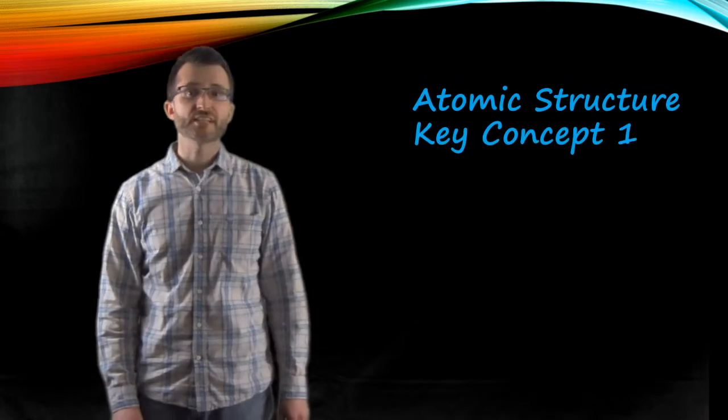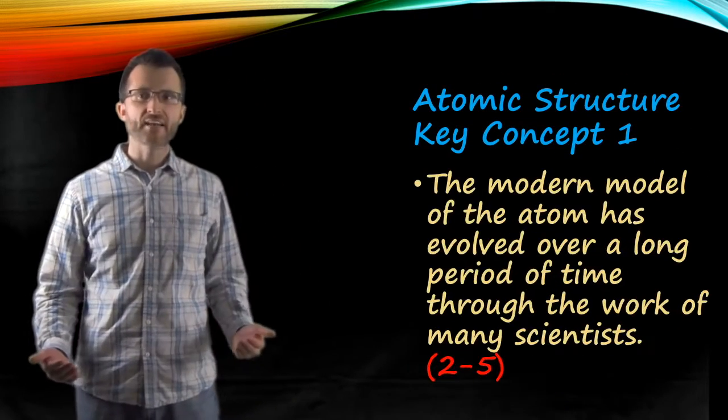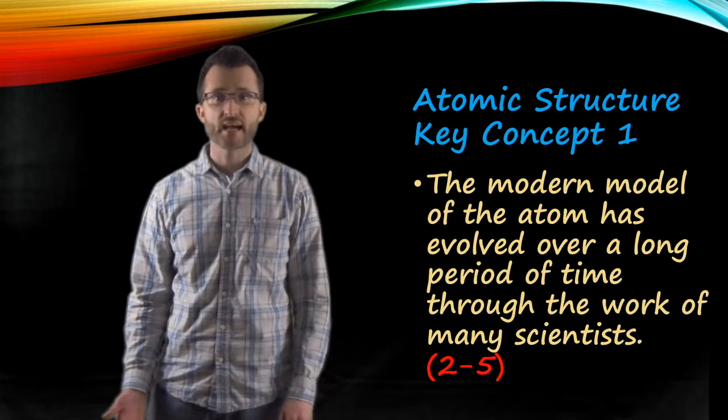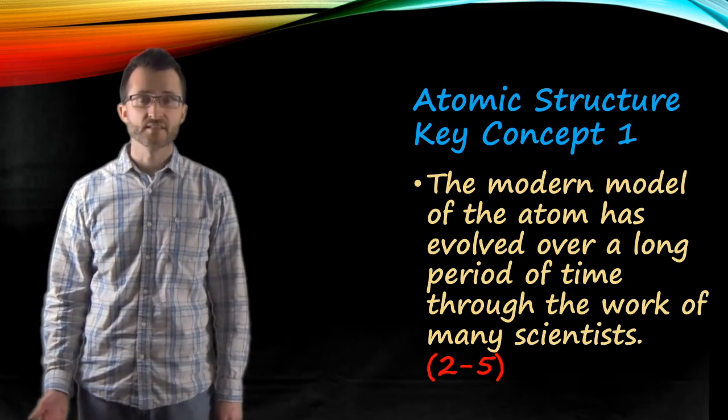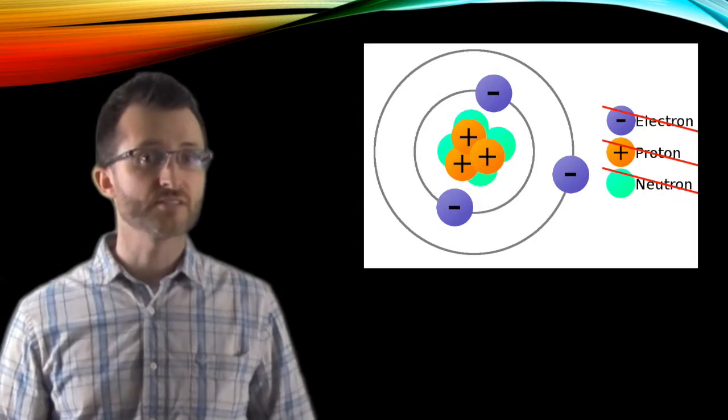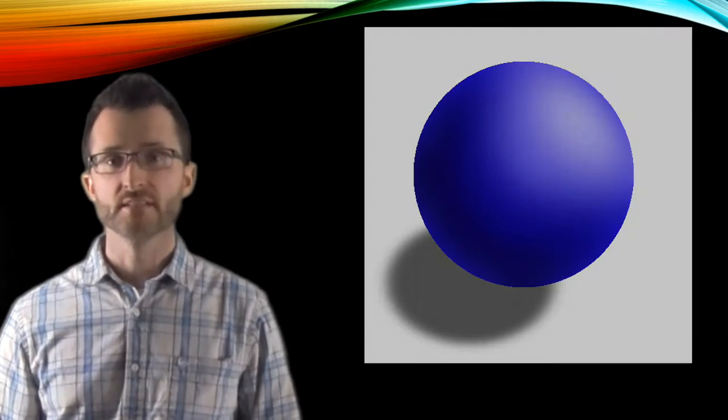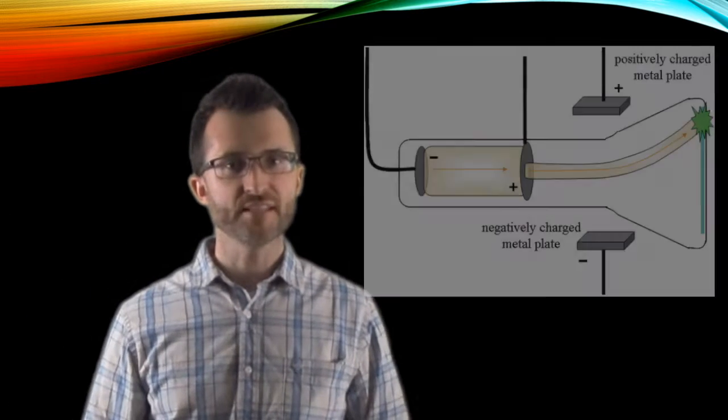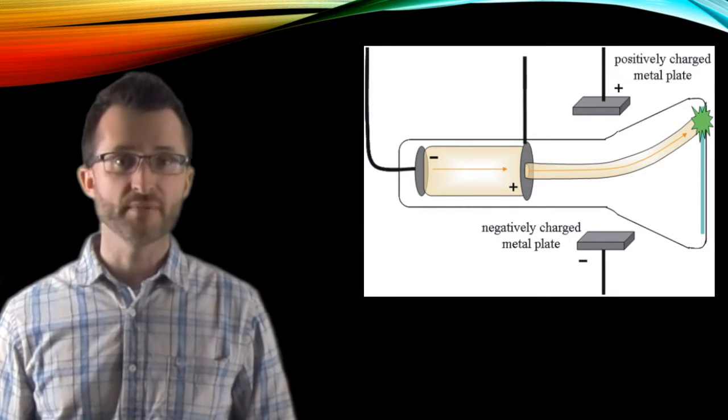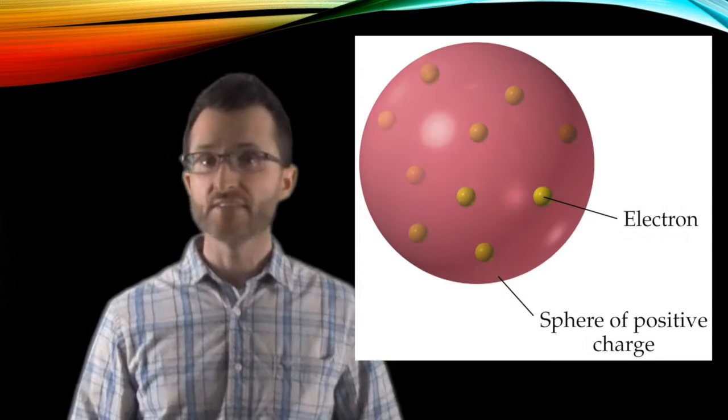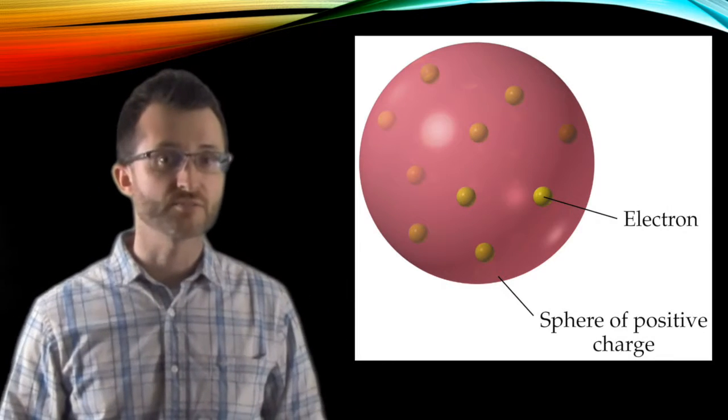Atomic structure, key concept one. The modern model of the atom has evolved over a long period of time through the work of many scientists. We can start things off with Dalton. Dalton had no protons, neutrons, or electrons, so we call his model the hard sphere model. Next up, we have Thomson, who in his cathode ray tube experiment discovered the electron, giving us the plum pudding model as a result.